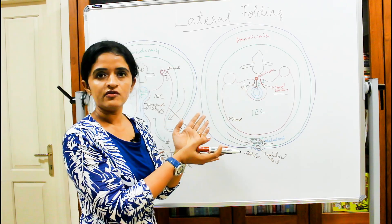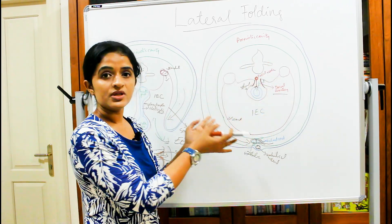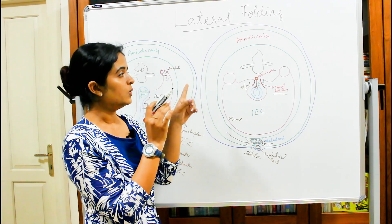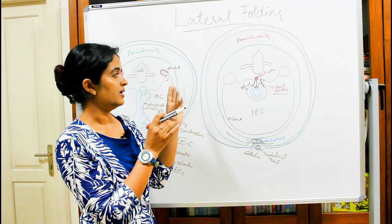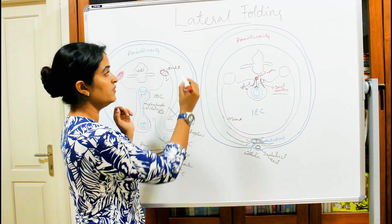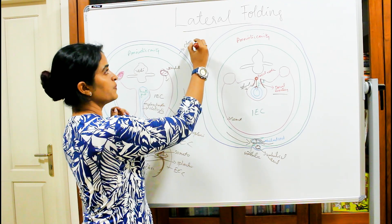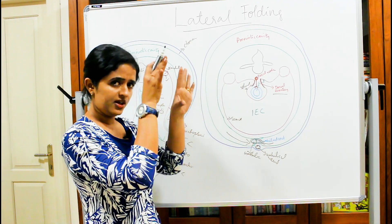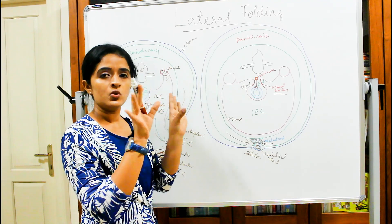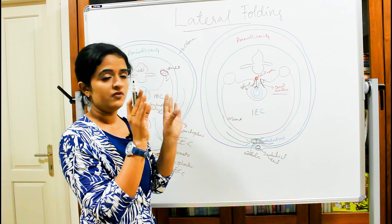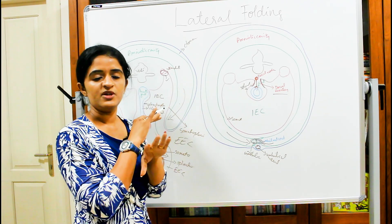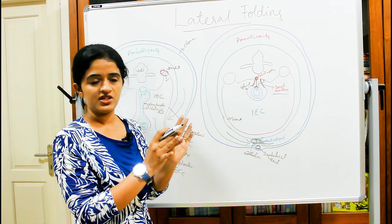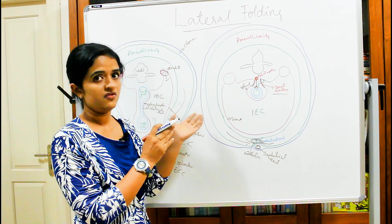Before lateral folding completion, the amniotic cavity only covered part of the embryo. After completion of lateral folding, the amniotic cavity now surrounds the entire embryo, and the embryo is free to float within it. Initially there was a small chorionic cavity — the extra-embryonic coelom — but as the amniotic cavity becomes bigger and bigger, it pushes to the periphery, fuses with the chorion, and the chorionic cavity disappears. You are then left with only the amniotic cavity, with the amnion and chorion as the fetal membranes.